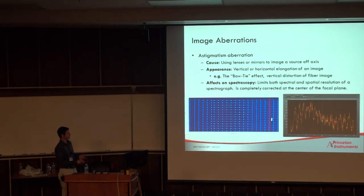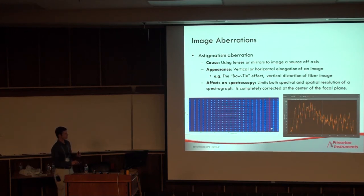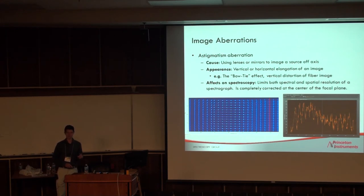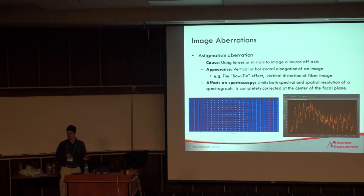Looking along the vertical direction, we should see individually resolved images. Instead, there's light where there shouldn't be, which affects quantitative measurements — you may think you know how much light contributes to a particular peak at a particular wavelength, but that might not be the case. Especially at the corners, the peak profiles are actually rotated and stretched, including in the horizontal plane — the direction of wavelength dispersion.